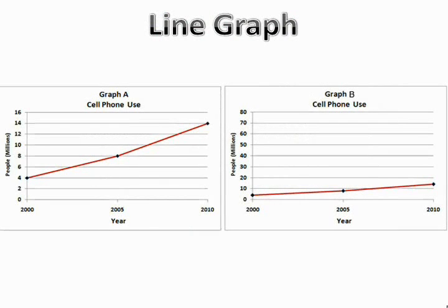Now let's take a look at the graphs on cell phone use. Both graphs start at 0 and show the same information. Look at the maximum values on each graph. Graph A is 16 and Graph B is 80, which is extremely high compared to the actual usage. The difference between cell phone use in 2000 and 2010 is 10 million people. By setting the maximum value so high in Graph B, it makes that difference seem much lower than it actually is.